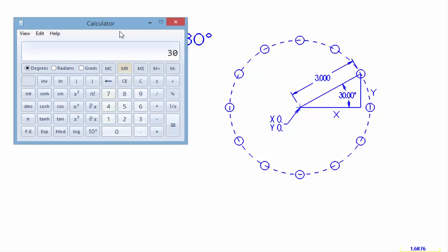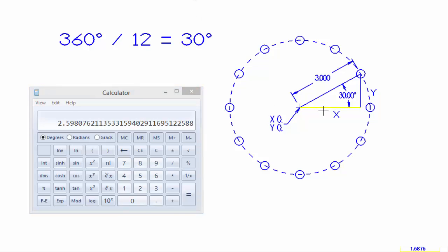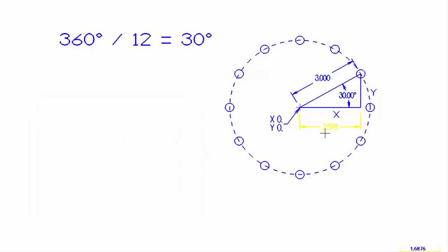The first thing we're going to do is calculate the distance in x. We bring up the calculator, plug in 30 degrees, take the cosine, and multiply that times the 3 inches. We come up with 2 inches 598, and so that is the x distance to the center line of this hole.